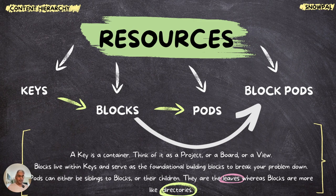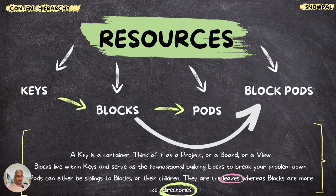We also have block pods, because customers need a third level of hierarchy under blocks. So you can have keys, blocks, and then pods underneath blocks called block pods. Pods can either be siblings to blocks — therefore children to keys — or they can be block pods, which are children to blocks and therefore grandchildren to keys. This is very simple — it just takes a minute to explain. If it's unclear, just replay the last 30 seconds.